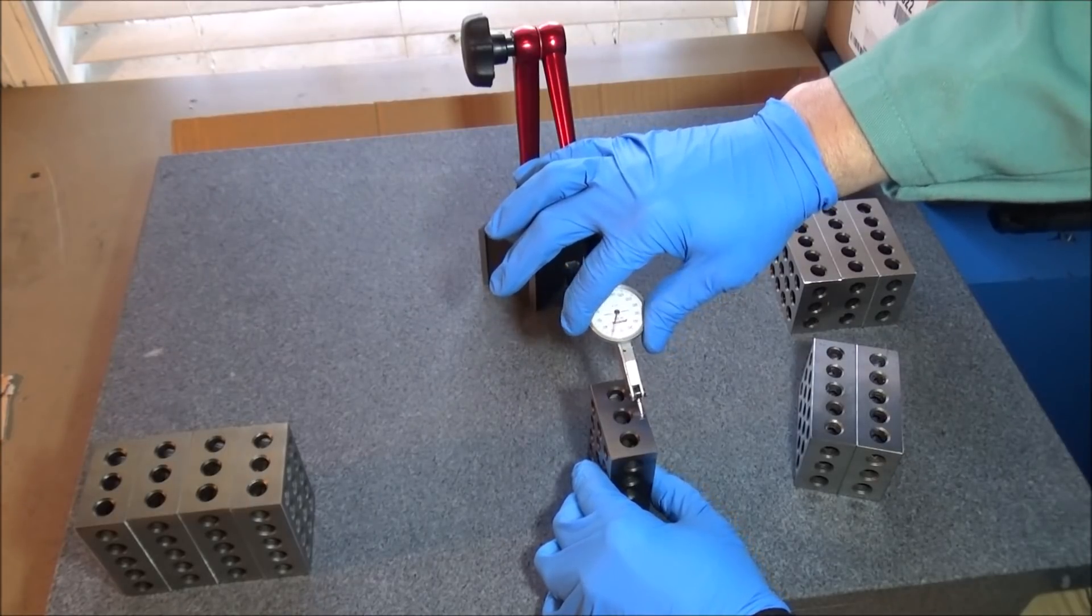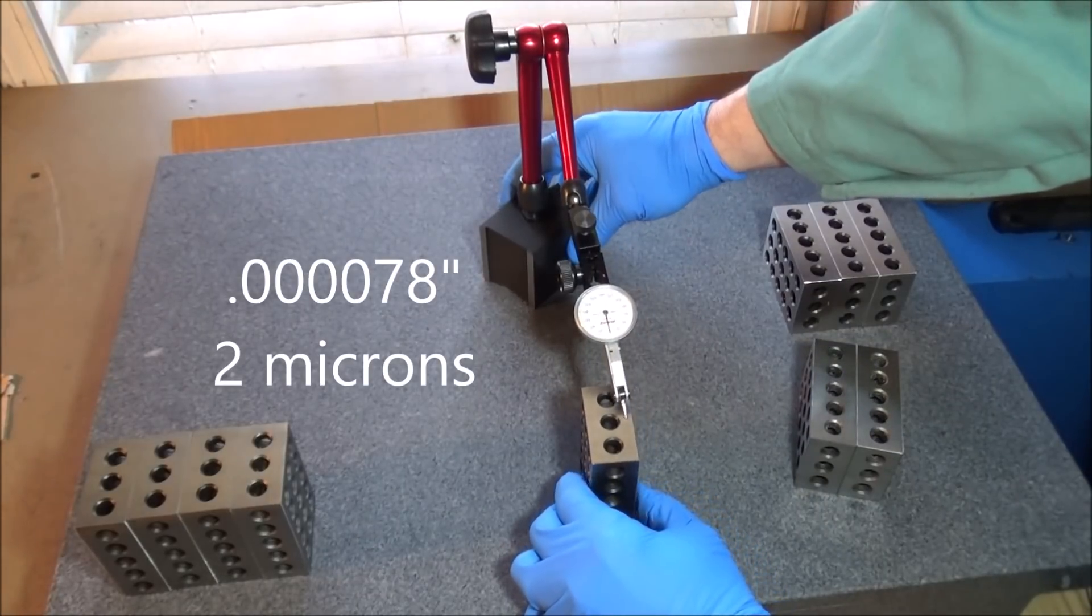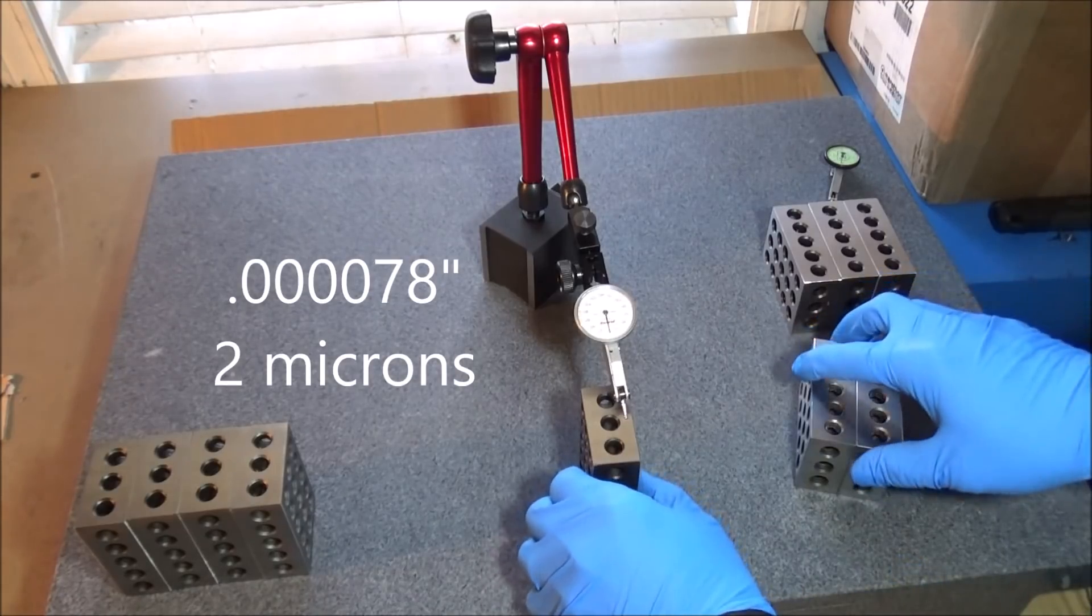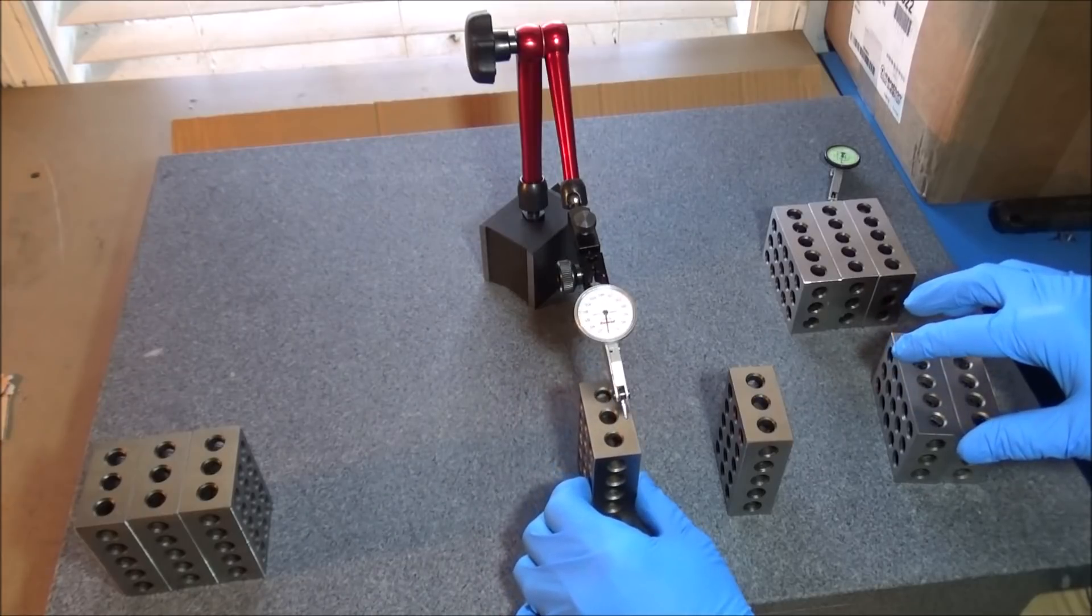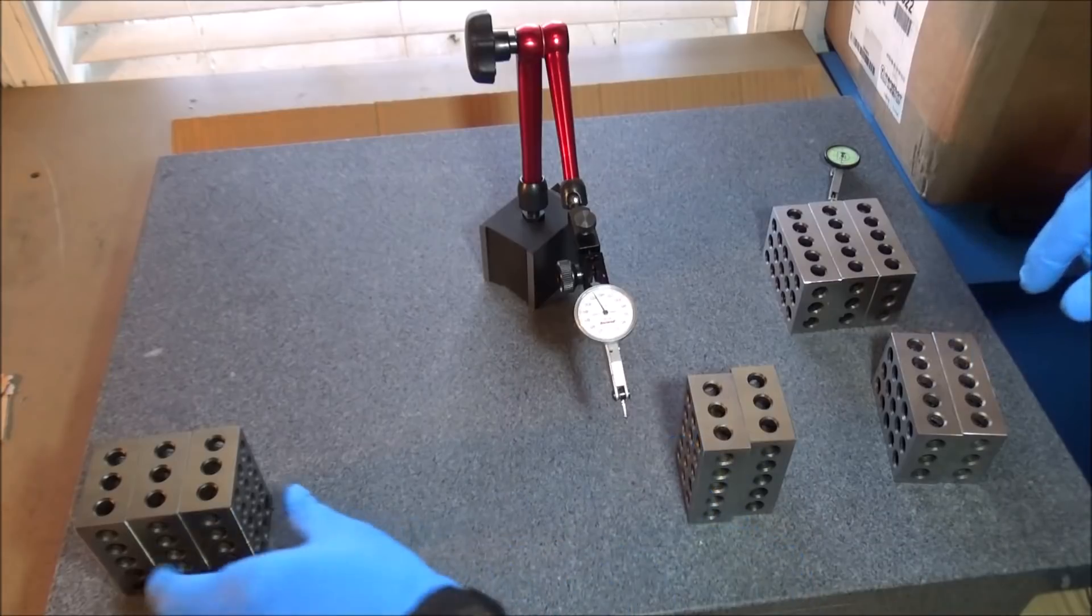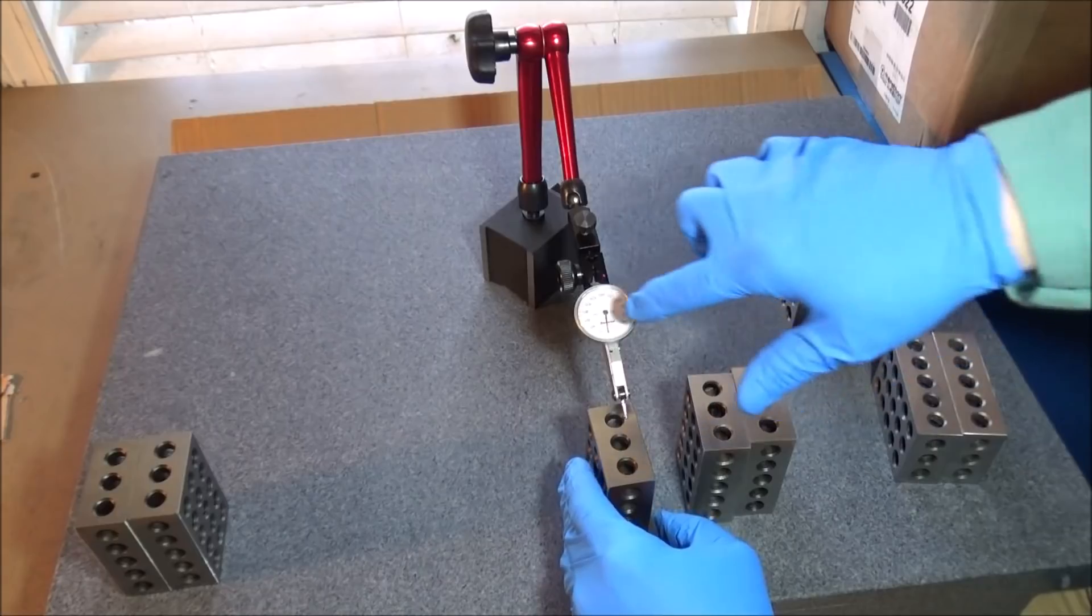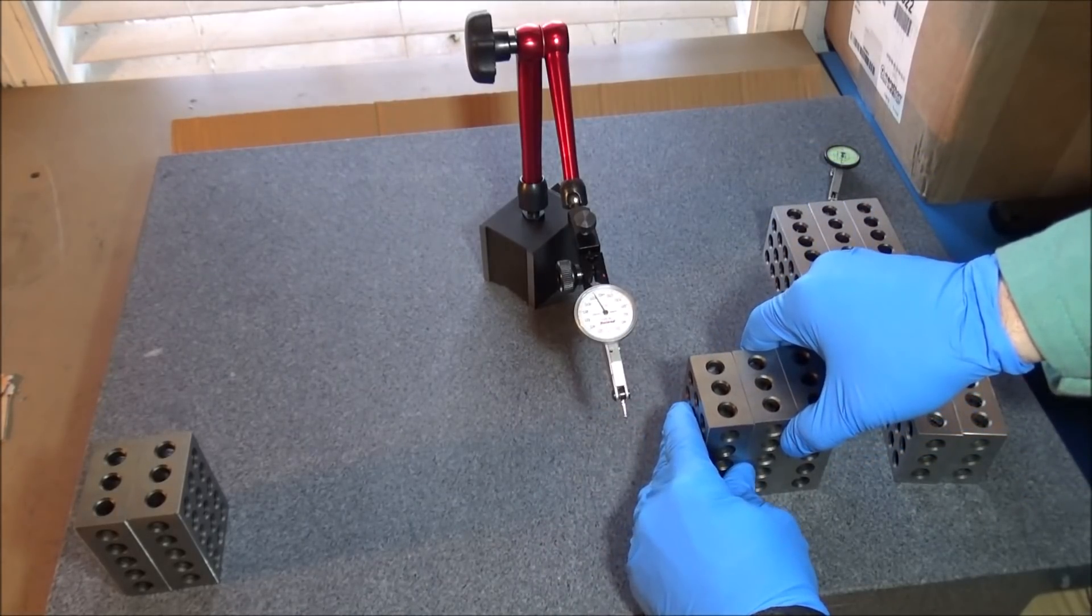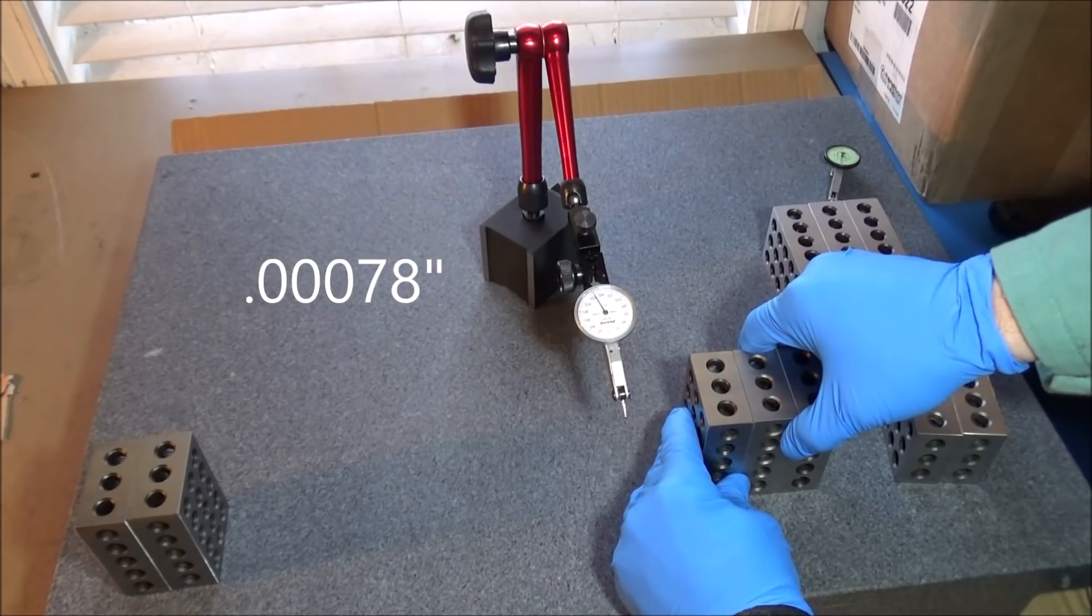Now this particular indicator is a lot finer resolution. This is 2 microns so it'll give you a lot better, more accurate reading because you're dealing with the higher resolution. So you can see what it is. Now 20 on this particular indicator is about 7 tenths.